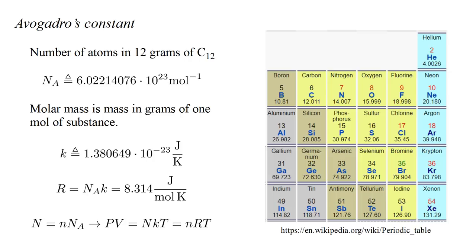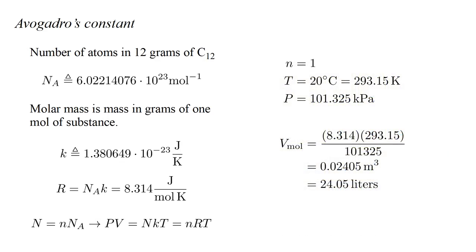If we express the number of molecules as the number of moles, lower case n, times Avogadro's constant, then pressure times volume equals number of moles times the gas constant times temperature in kelvin. If we use this to determine the volume of one mole of gas molecules at twenty degrees Celsius and standard atmospheric pressure, we find a volume of about twenty-four liters.